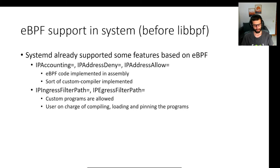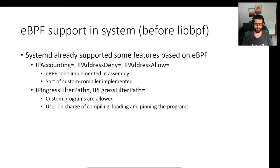Before we implemented these security features, systemd already supported some features based on eBPF. The first feature supported was the IP firewall. This feature allows us to count the IP packets based on the IP and also to deny or to allow those packets based on the IP address. Those programs were implemented by writing the eBPF code directly in assembly — there was a custom compiler that translated the user configuration into eBPF assembly code.